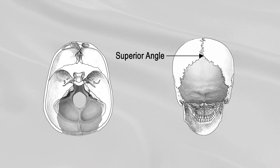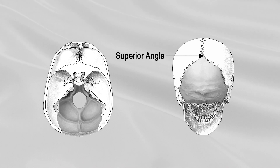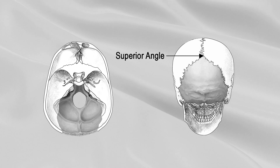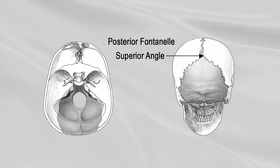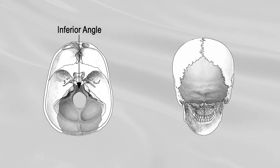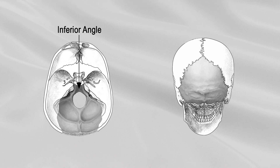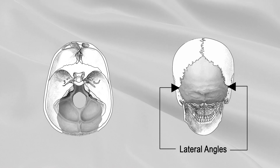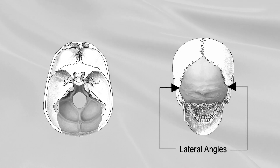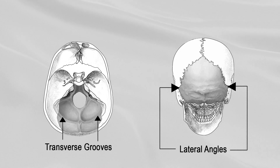The superior angle of the occipital bone articulates with the parietal bones. In the fetal skull, it corresponds in position with the posterior fontanelle. The inferior angle is fused with the body of the sphenoid. The lateral angles are situated at the extremities of the transverse grooves.